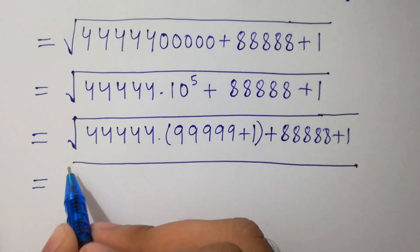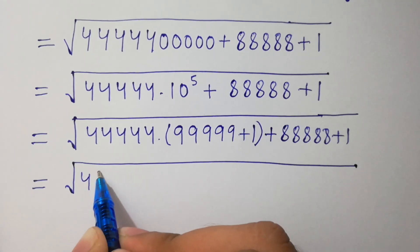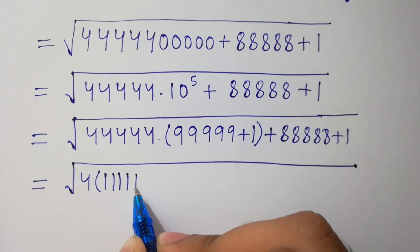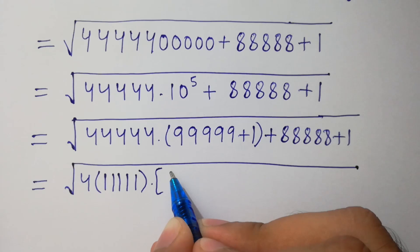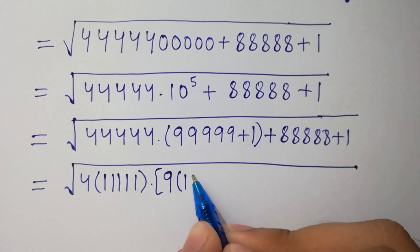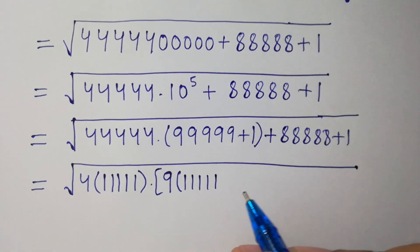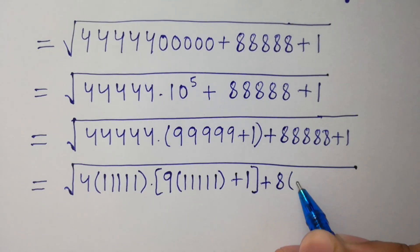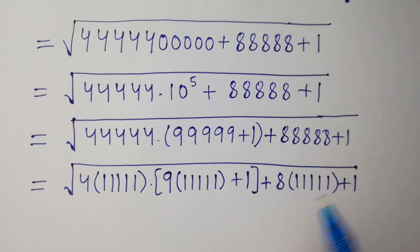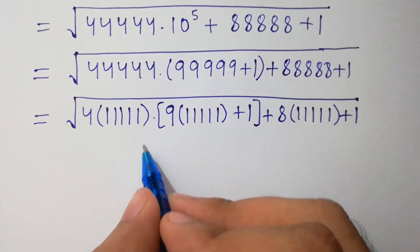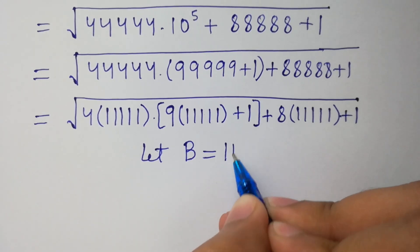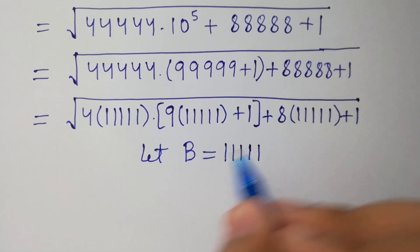Next step, we can factor out common values. We have 5 times 11111, and here we can factor out 9 we have 11111, plus 1 as it is, and here we can factor out 8 we have 11111, plus 1 as it is. Let's suppose that, let B equals to 11111.